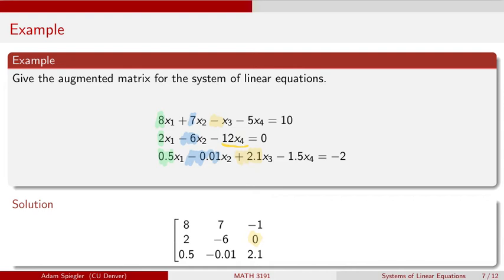Last, next up would be the x4 term. That would be the minus 5. We want to include the negative sign, the minus 12, and the minus 1.5. That gives us column 4 in our augmented matrix.